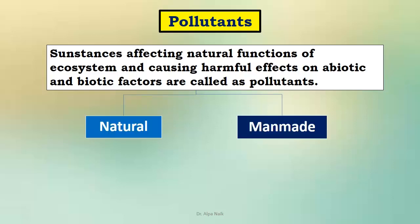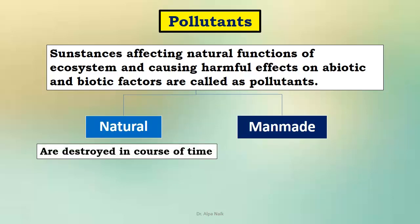Pollutants are natural or manmade. Natural ones can be destroyed in the course of time, whereas manmade ones are not destroyed. Also, children, there are certain substances which are very useful, but when they exceed their limit, they become pollutants. For example, carbon dioxide in air is very useful for photosynthesis, but when the percentage of carbon dioxide in the air increases, we say there is air pollution and it becomes harmful.